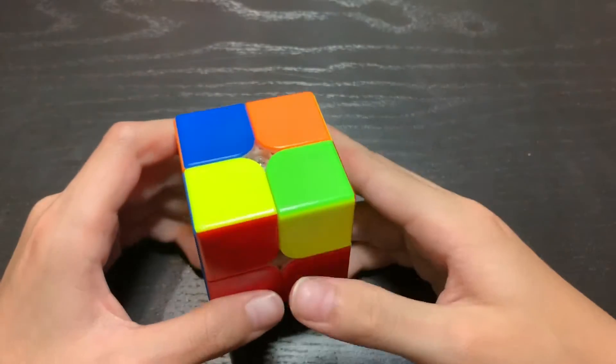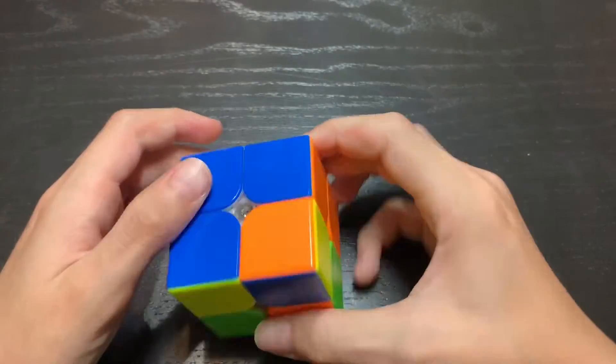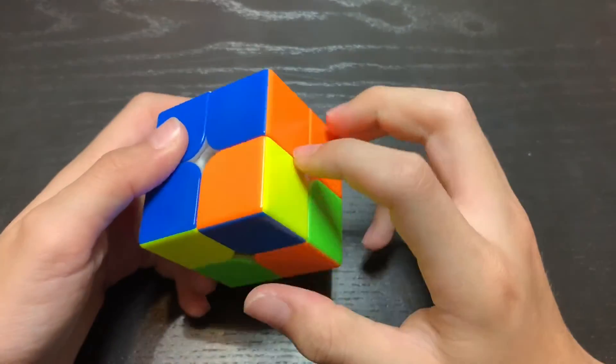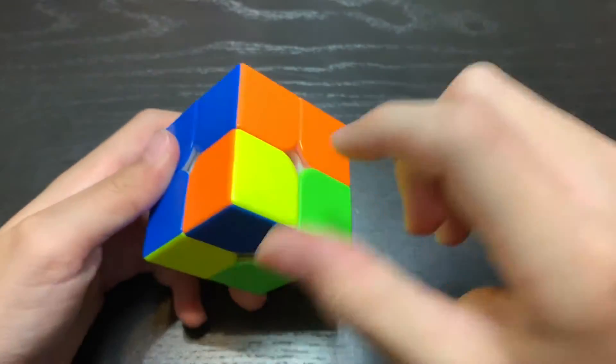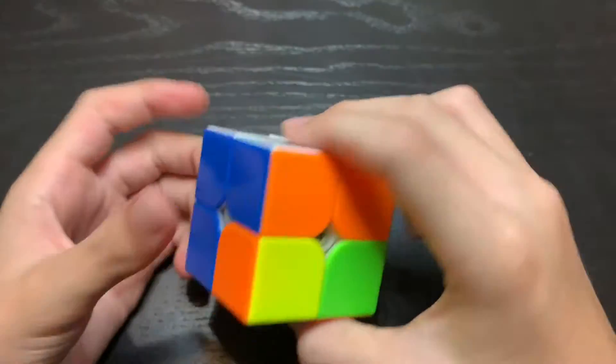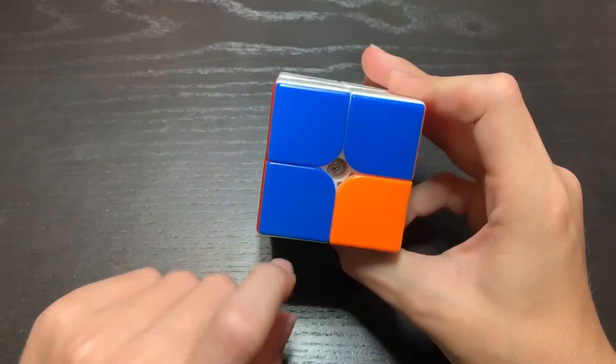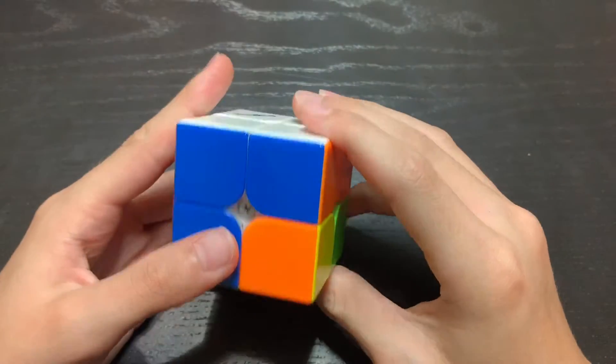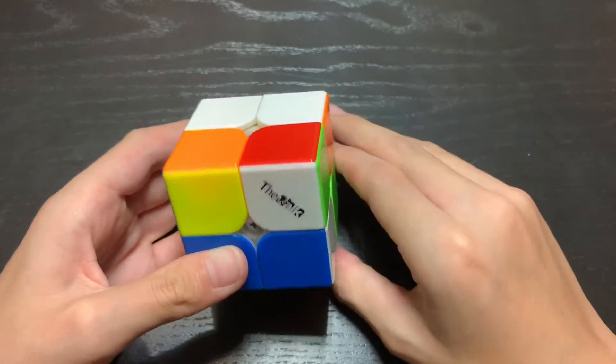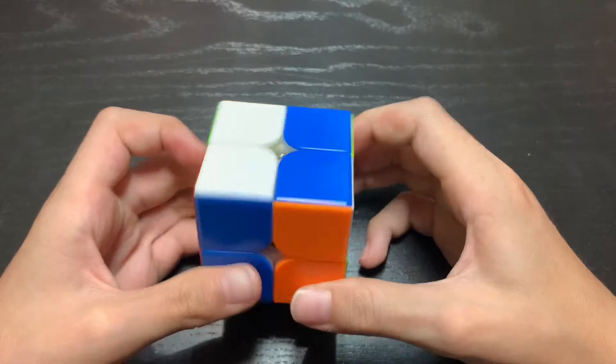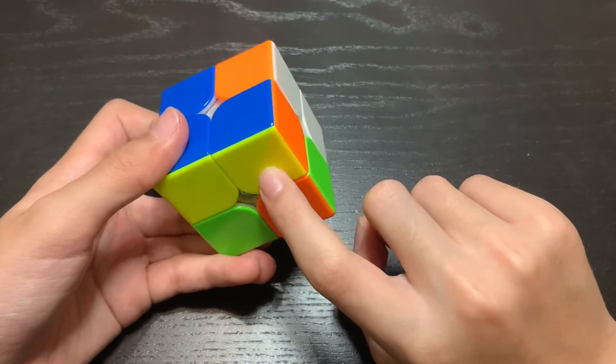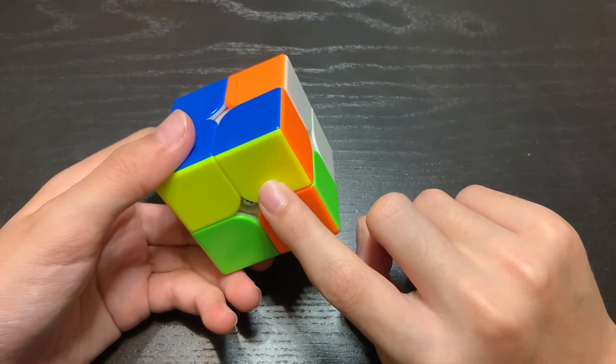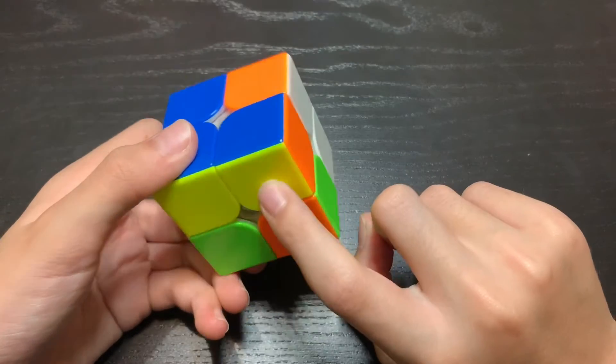Now that the corners are oriented, you turn the cube upside down. You have to flip all of the pieces. To do this, just hold, if you have a solved piece, hold it here, and do R, U, R prime, U prime, until the yellow piece faces the correct way. So it's facing down.